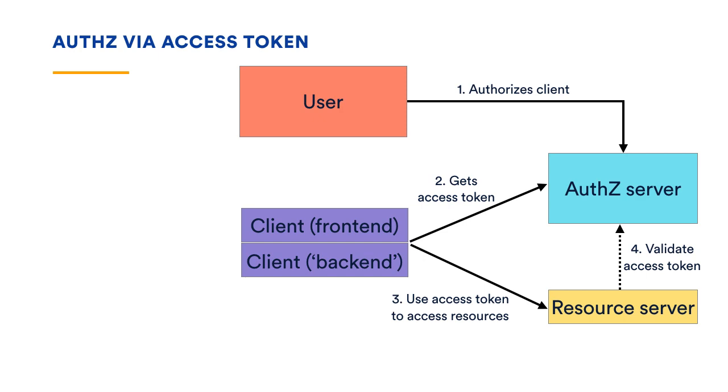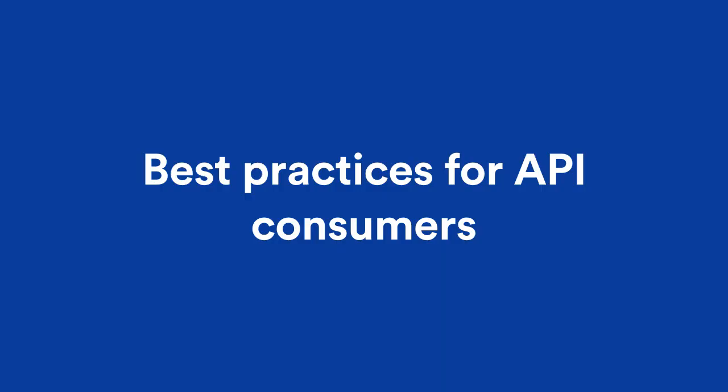So you can see this flow is really complicated, but it all boils back down to that simple picture: user authorizes client, client gets access tokens, and uses those access tokens to access the resource servers. That's OAuth.